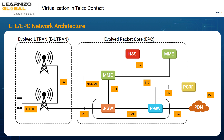The SGSN functionality of 3G is divided into two parts: one is MME, which does the control plane part — that is, signaling — and the other is SGW, which does the user plane part and manages traffic.